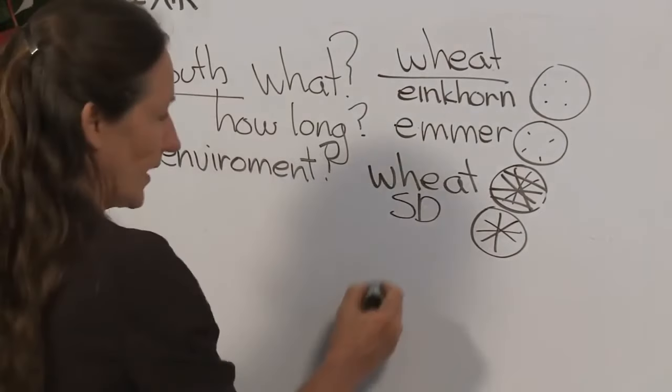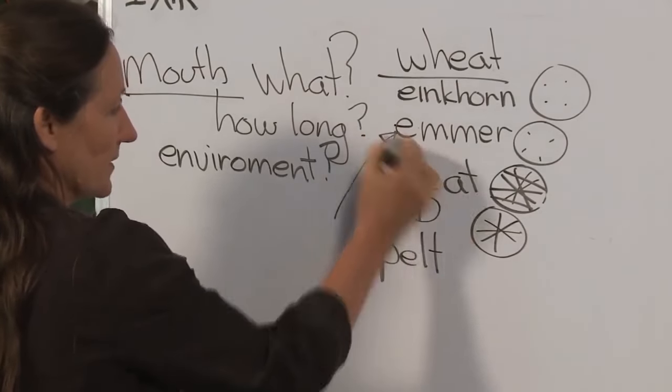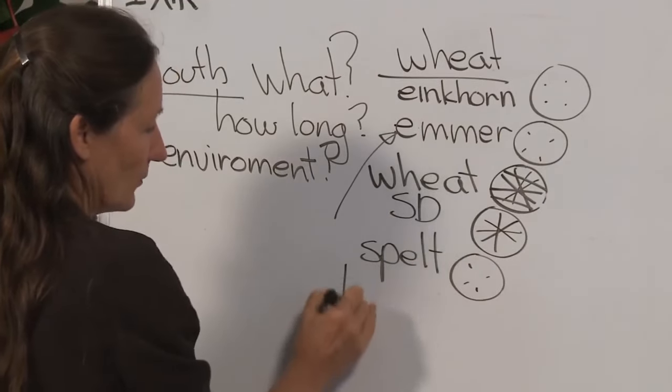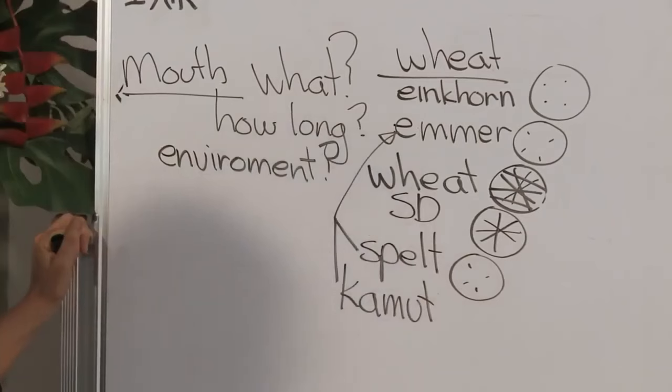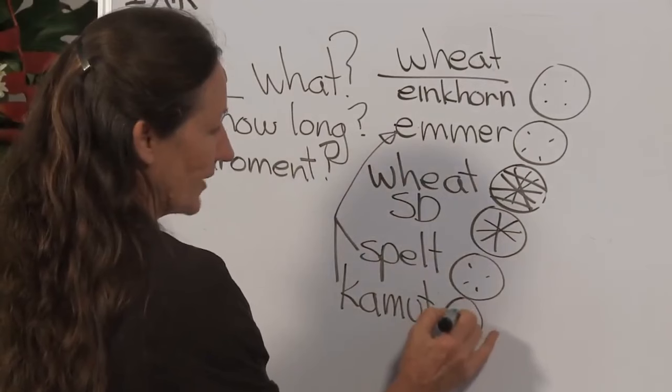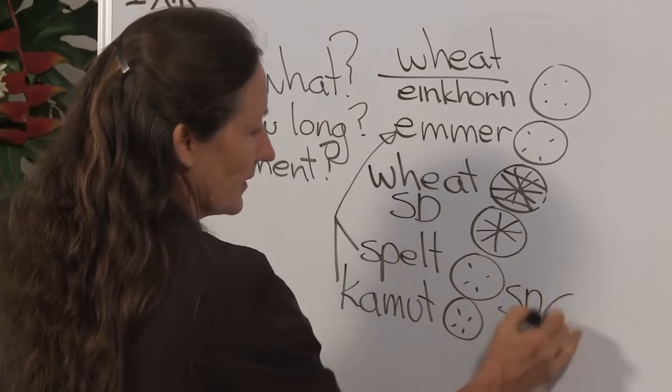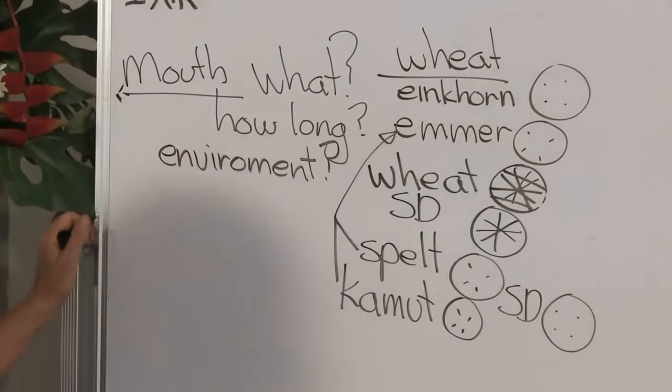But you can get a grain today called spelt and it's a wild or field hybrid of the emmer wheat. So it still retains that fragile structure. Another one is kamut. Kamut is also a wild or field hybrid of the emmer wheat and it also contains that fragile structure. And if these flours are made into a sourdough bread, that brings it virtually back to the original enkhorn structure. Isn't that good news? So some people say, can you get the original wheat? You can in the form of spelt and kamut.